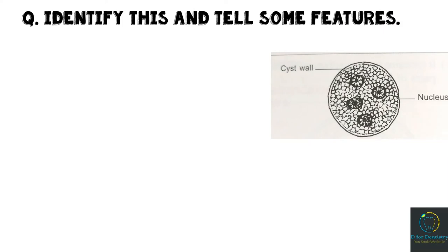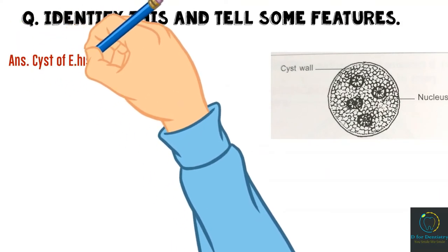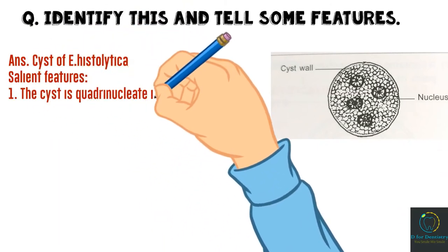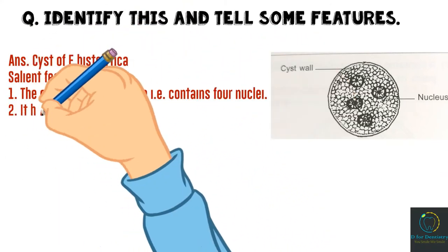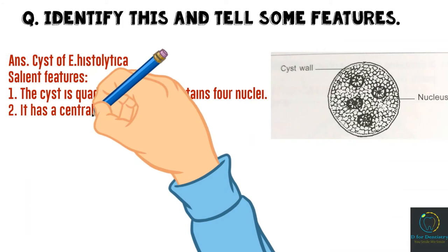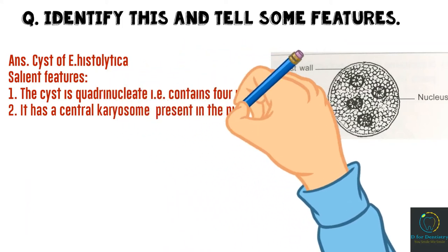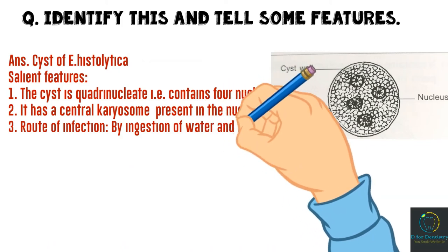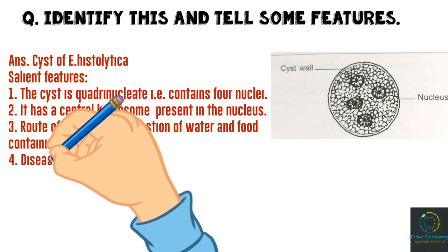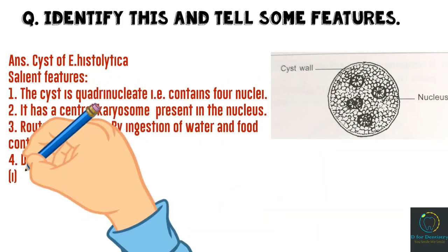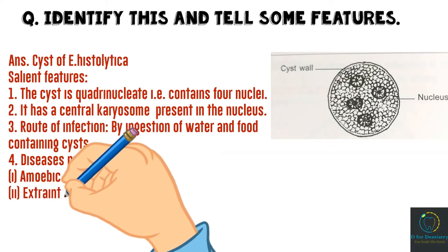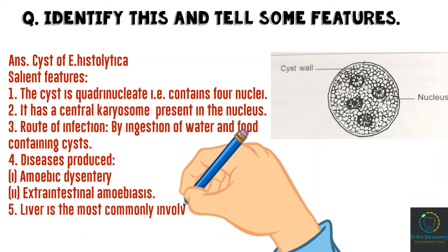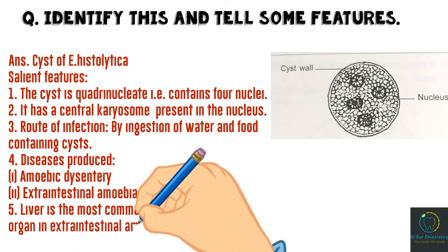Identify this and tell some features. The cyst is quadrinucleate — that is, it contains four nuclei. It has a central karyosome present in the nucleus. Route of infection is by ingestion of water and food containing cysts. Disease produced is amoebic dysentery. In extra-intestinal amoebic disease, the liver is the most commonly involved organ.